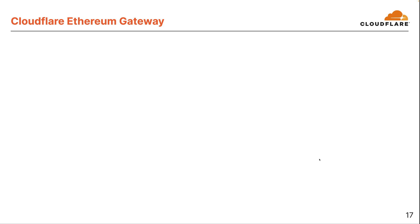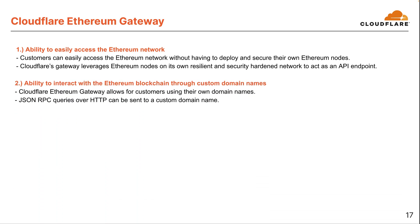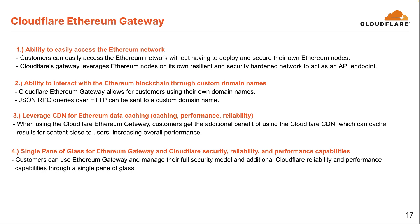Moving on to the Cloudflare Ethereum gateway and what it provides. Customers can easily access the Ethereum network without having to deploy and secure their own Ethereum nodes. The Cloudflare Ethereum gateway allows customers to use their own domain names, so JSON RPC queries over HTTP can be sent to a custom domain name. And as before, customers get the additional benefit of using the Cloudflare CDN, which can cache results close to users, increasing overall performance. Similar to IPFS, customers can manage their full security model and additional Cloudflare reliability and performance capabilities through a single pane of glass.